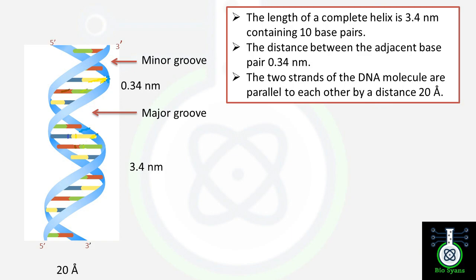The distance between adjacent base pairs is 0.34 nanometers. The length of a complete helix is 3.4 nanometers, consisting of 10 base pairs. Also, the helix has a constant diameter of 20 Angstroms or 2 nanometers. These points have been highlighted here.